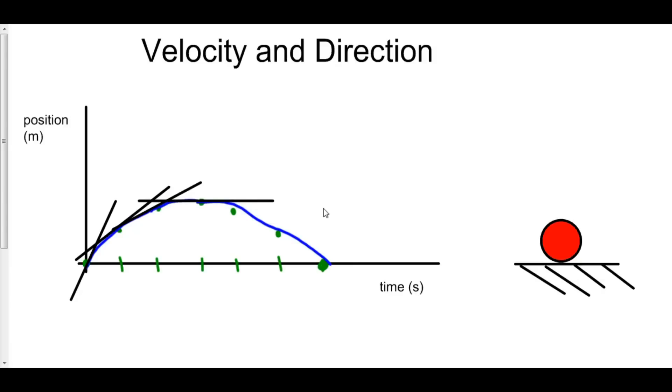Why is the velocity zero at its maximum point? Well, think about a ball going up into the air. It starts off very fast, slows down, slows down. It gets the peak. It stops for a brief moment in midair, and then it starts coming back down.